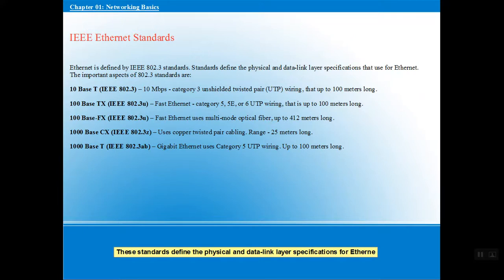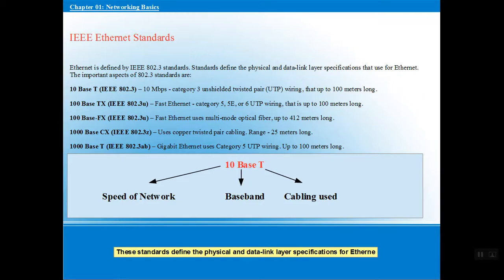Next we have IEEE Ethernet standards. IEEE defines the physical and data link layer specifications for Ethernet. The standards and protocols are defined by the IEEE — Institute of Electrical and Electronics Engineers — under the 802.3 standard. The scenarios include 10BASE-T, 100BASE-T, and 1000BASE-T. In these names, each part has meaning: the first number defines the speed of the network, 'BASE' indicates baseband signaling, and 'T' indicates the type of cabling used.